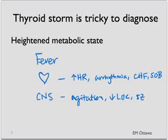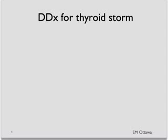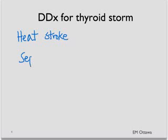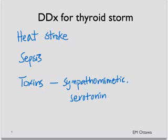What conditions can you think of that look like this? There are three main broad categories. First, heat stroke — often the history might be helpful. The second category is sepsis, which can affect any part of the body. The last broad category is toxins, such as sympathomimetics, serotonin syndrome, or neuroleptic malignant syndrome. They can all look like Thyroid Storm.